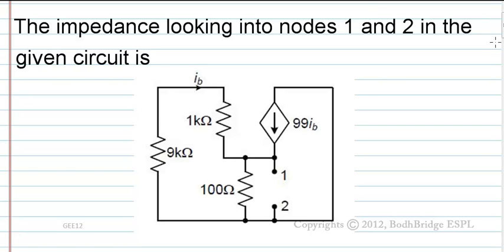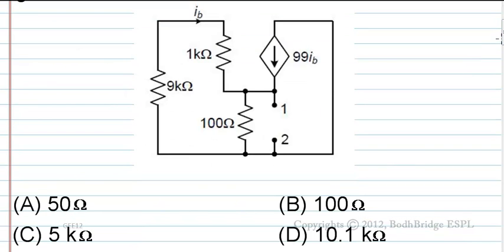Q. The impedance looking into nodes 1 and 2 in the given circuit is? The options are: A) 50 ohm, B) 100 ohm, C) 5 kilo ohm, D) 10.1 kilo ohm.